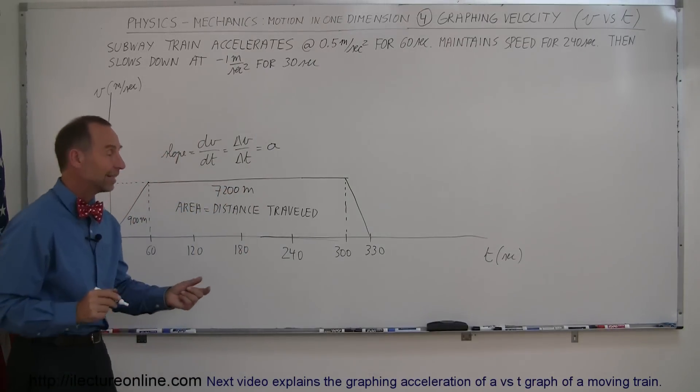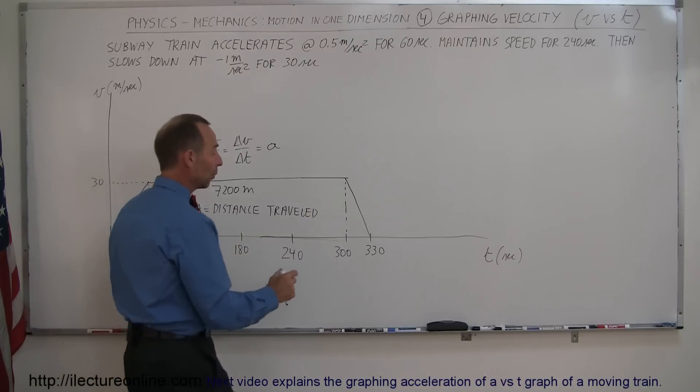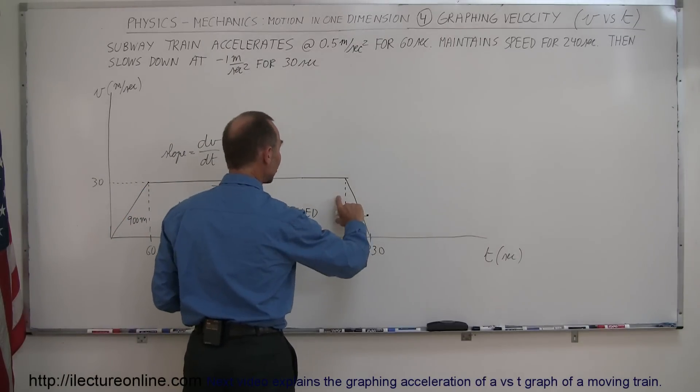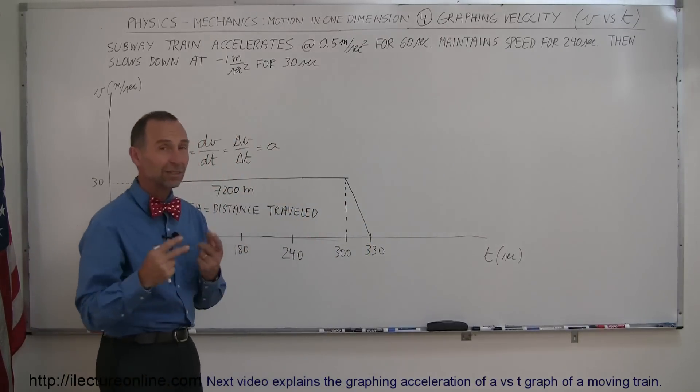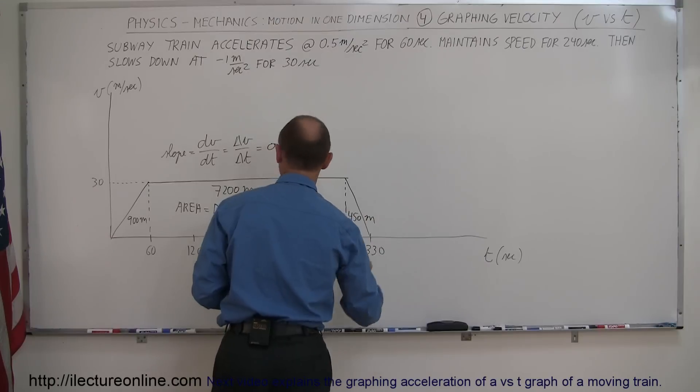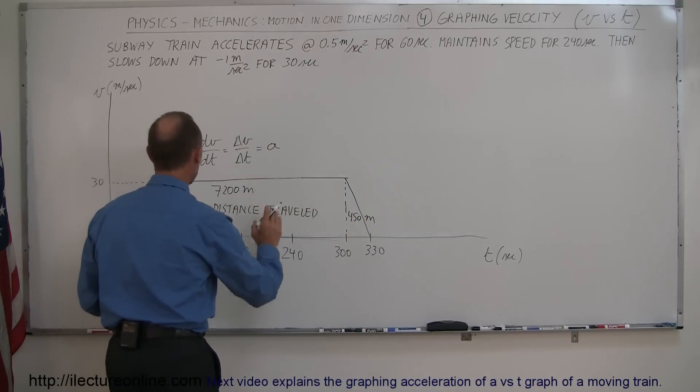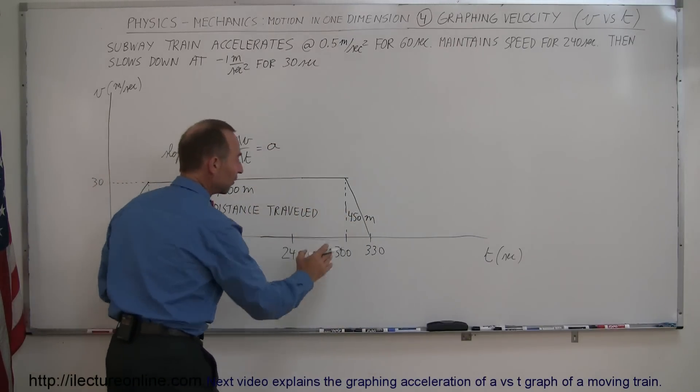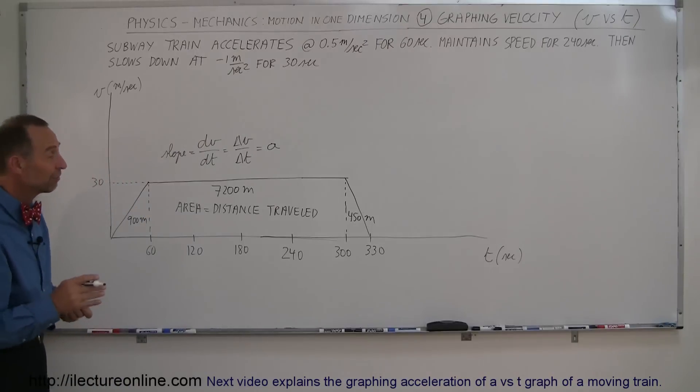And then finally, in this last triangle, it's one half the base times the height. One half the base is 30, the height is 30, that's 30 times 30 is 900, times one half is 450 meters. And so you can see that the total distance traveled is 8,100 plus 450, or 8,550 meters.